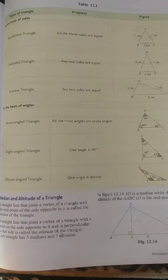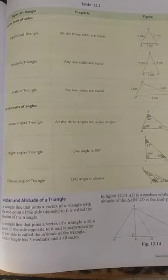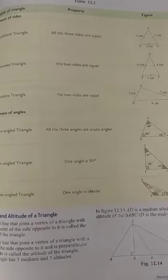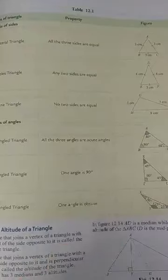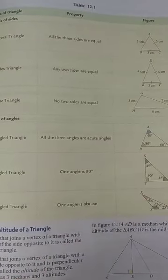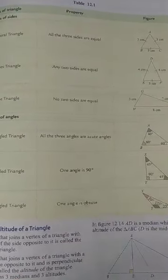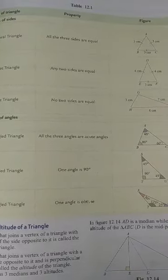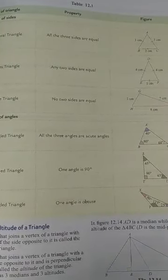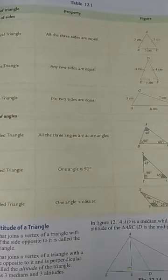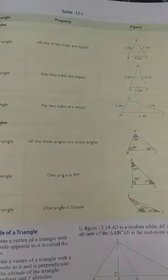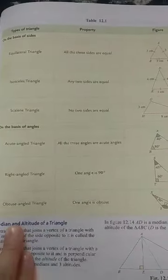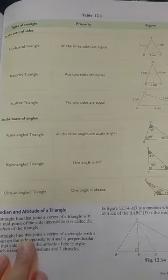Assalamu alaikum warahmatullahi wabarakatuhu. Welcome back, students. Today we are going to start with triangles and their types. A triangle is a three-sided closed figure having three sides, three angles, and three vertices. A key property of a triangle is that the sum of all its angles is equal to 180 degrees. Now we will study the types of triangles on the basis of sides.